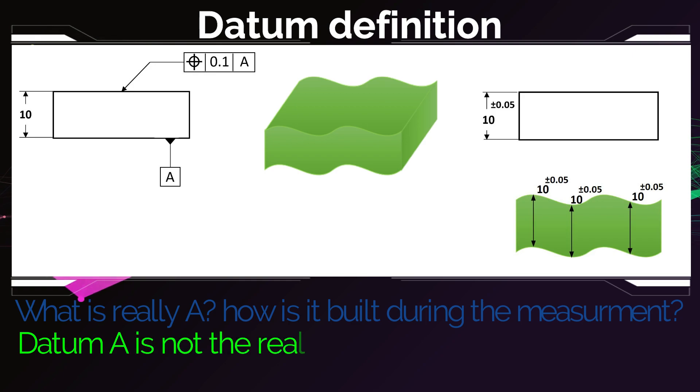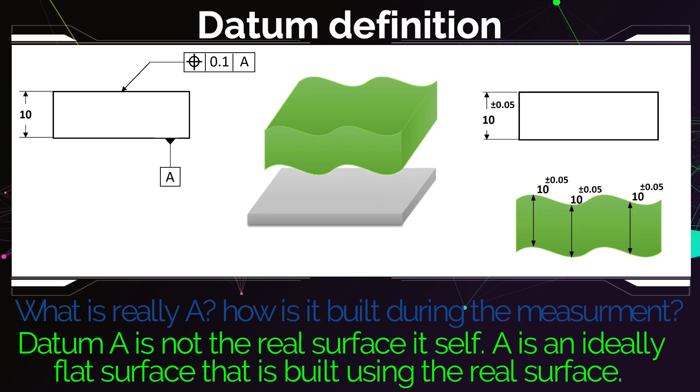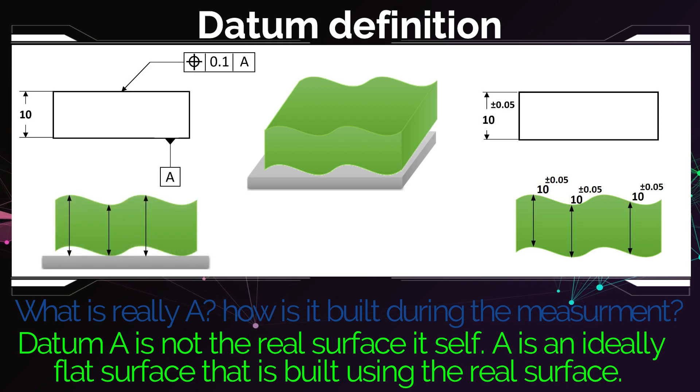But if we look at the measurement using GD&T, if the real surface still looks the same, datum A is not the real surface itself but it's an ideally plain and flat surface that is built using the real surface. It's like if you have an ideally flat piece of metal and you push it towards the object, and once it rests against the object, this ideally flat surface becomes datum A. Now if I measure the points on the top surface, if I measure the position, I don't measure to the real surface anymore - I measure to my datum A. And you can already see that the results of the two measurements will not be the same.